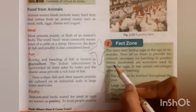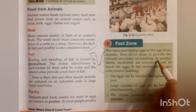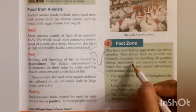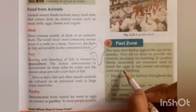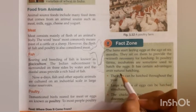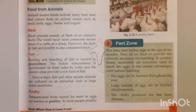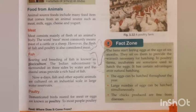In poultry farms, incubators are sometimes used to hatch the eggs. This has certain advantages over natural hatching. The incubator provides a body temperature higher than the hen's, so eggs get hatched more quickly when kept warm by the incubator.